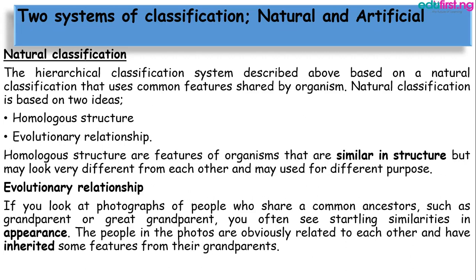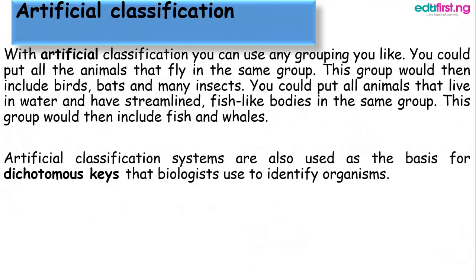For the artificial classification system, organisms are grouped by simple observable features. For example, this group would include bats and many insects. You could put all animals that live in water and have a streamlined, fish-like body in the same group — this group would then include fish and whales.